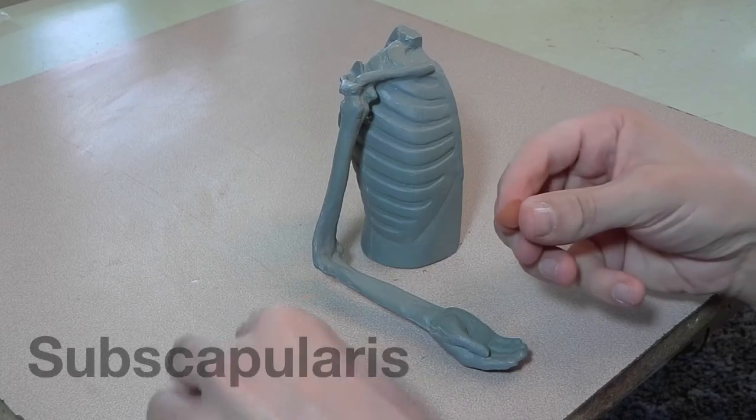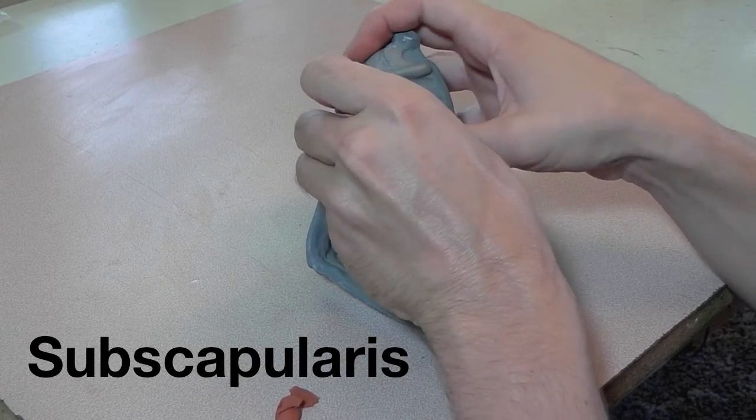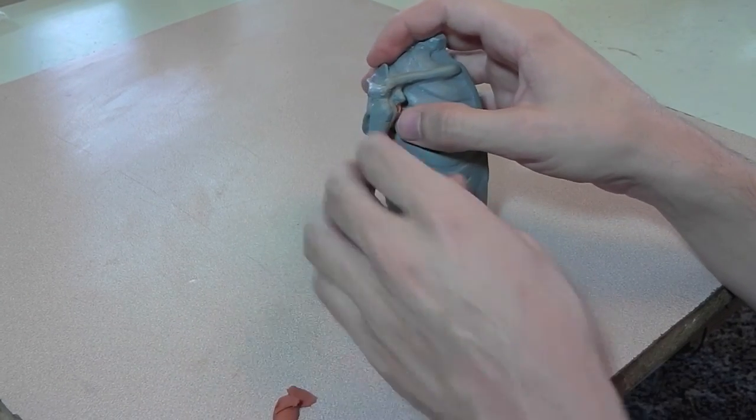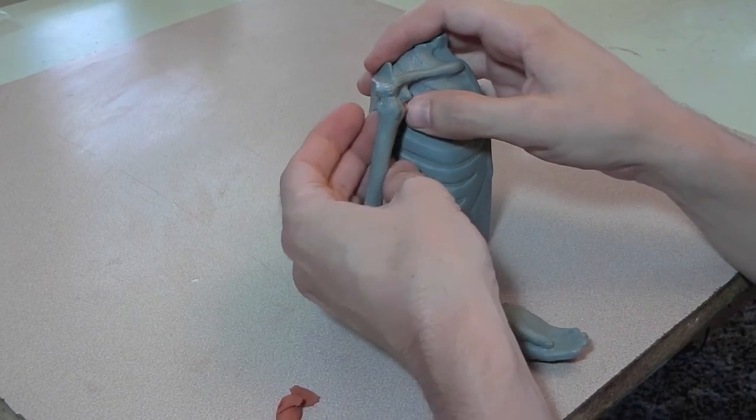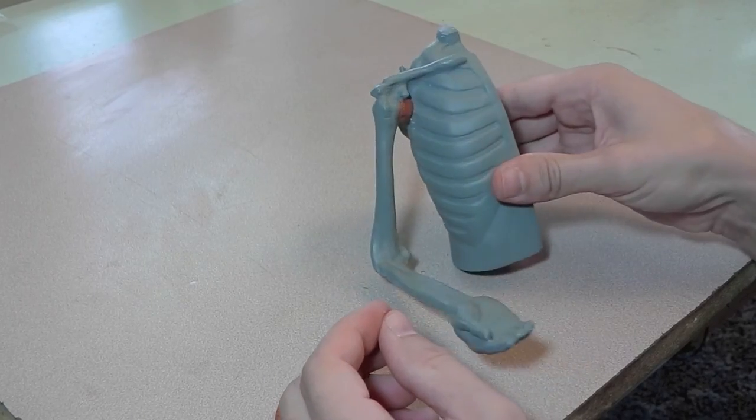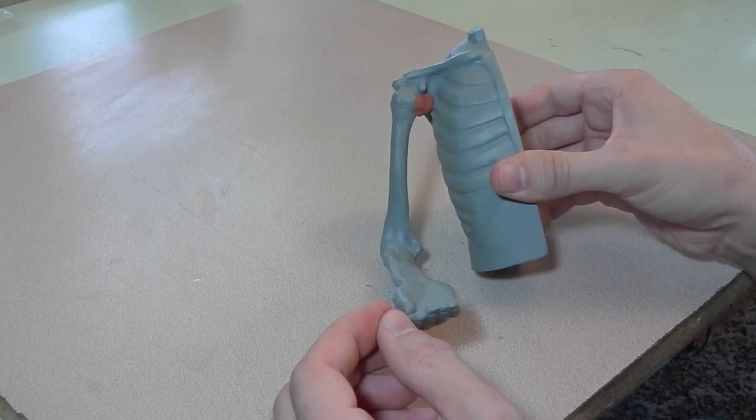I thought it'd be useful to see a clay representation of all the muscles as well, so here I am making the subscapularis, at least the part that's sticking out from underneath the scapula. You'll have to imagine it going back all the way underneath.